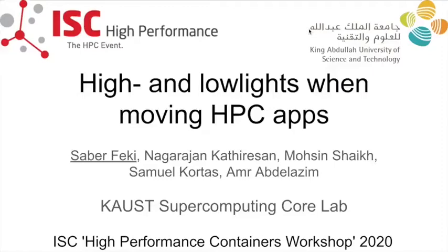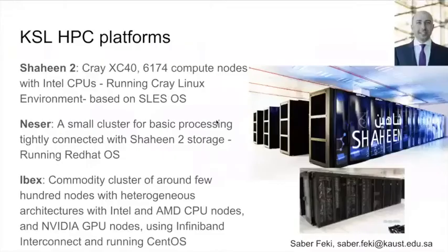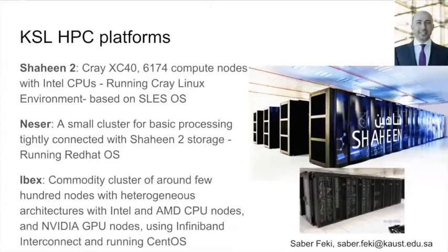Let me first describe our HPC platforms at KAUST. Our flagship supercomputer is Shaheen 2, a Cray XC40 with nearly 200,000 CPU cores running Cray Linux Environment based on SLES. Tightly attached to it, we operate a pre-post-processing system called Nesser running Red Hat OS. Finally, we provide heterogeneous architecture connected with InfiniBand in the IBEX cluster, which runs CentOS.